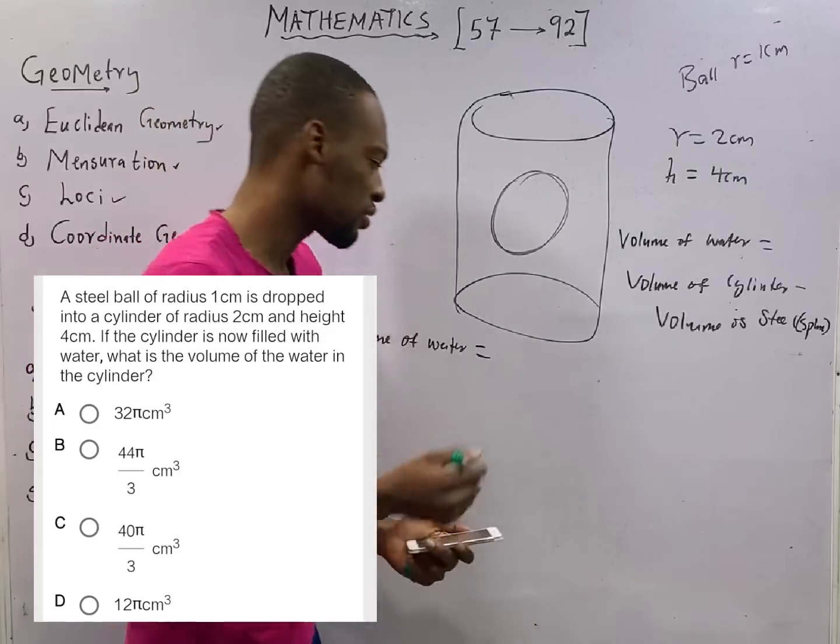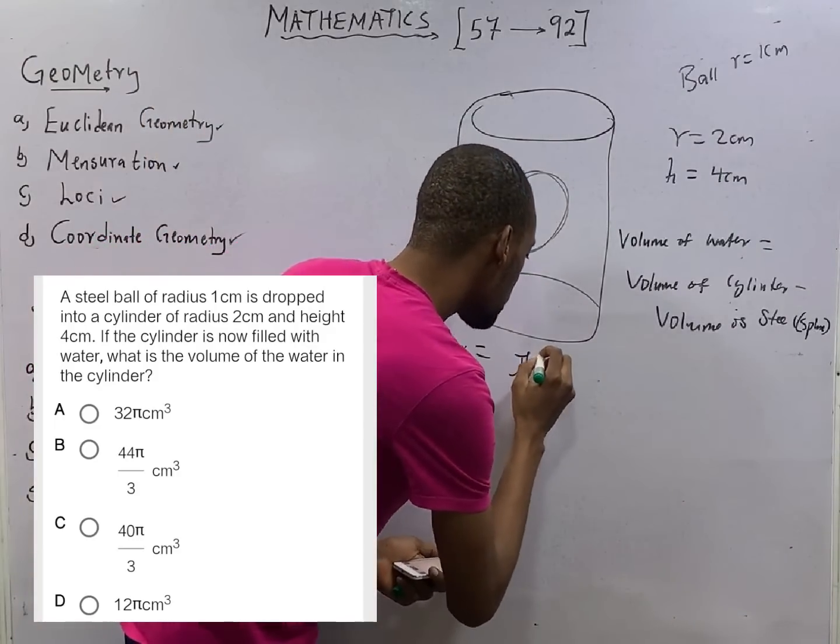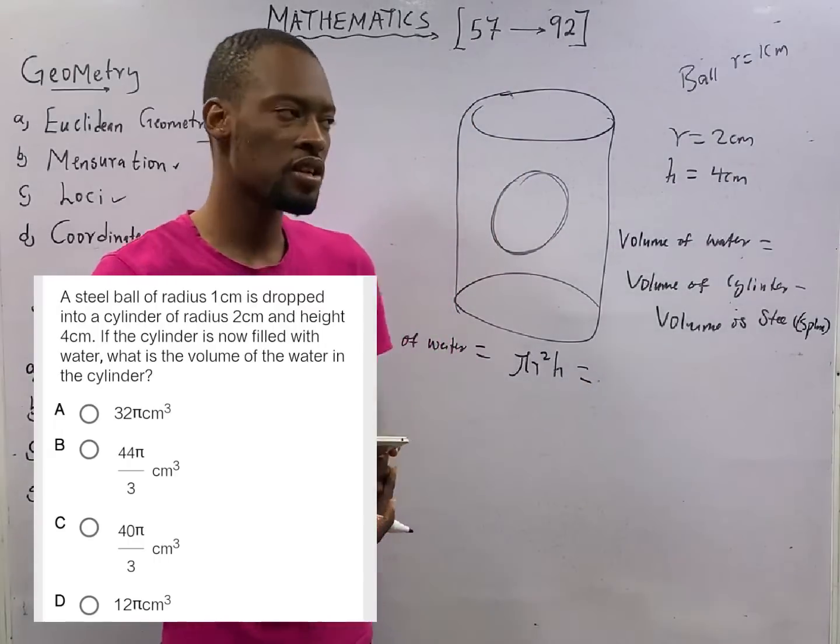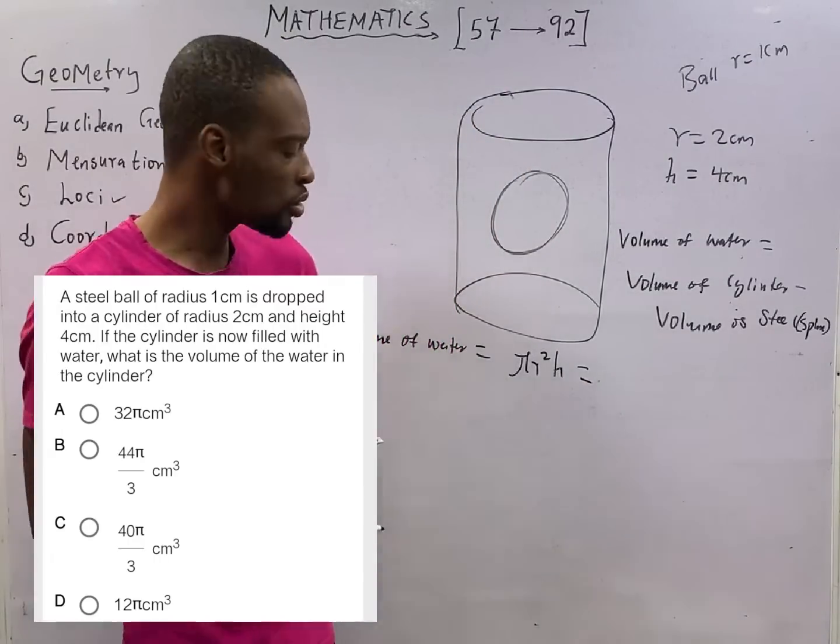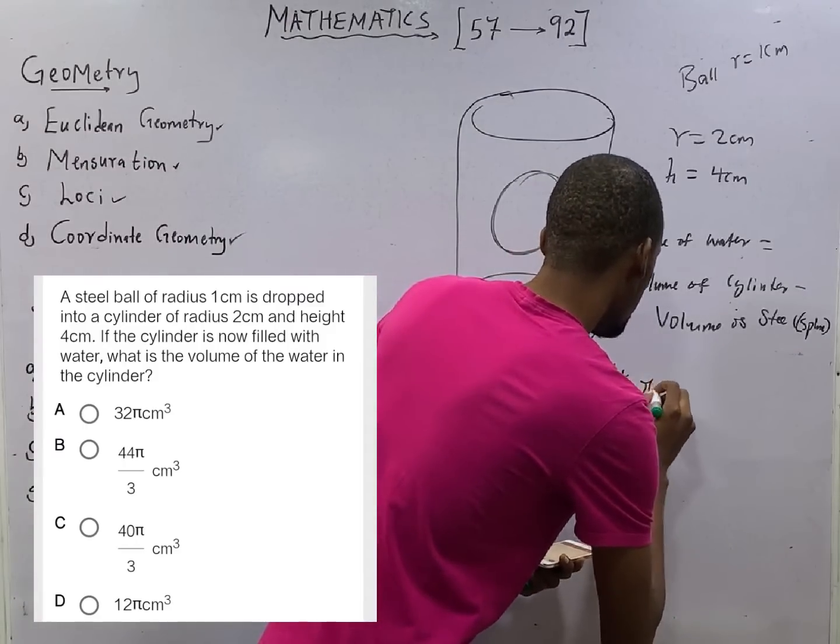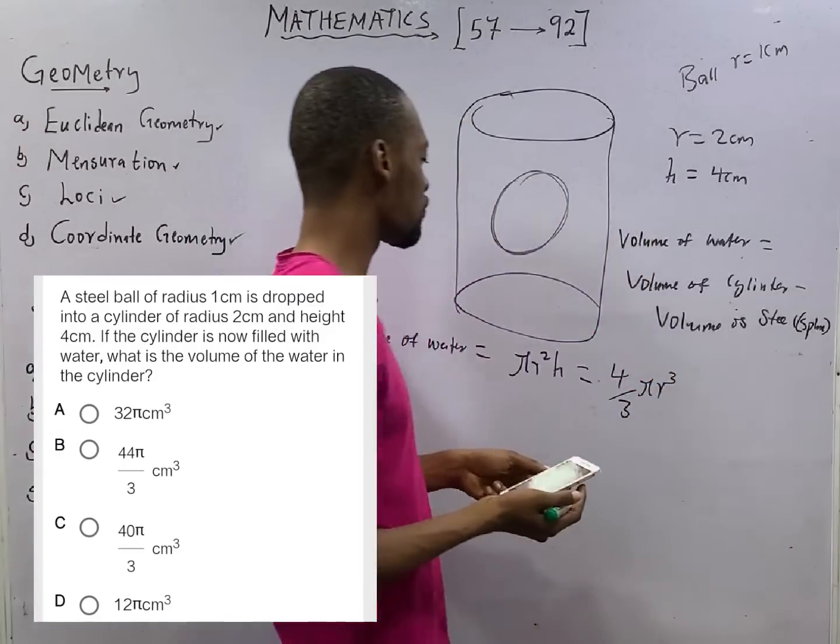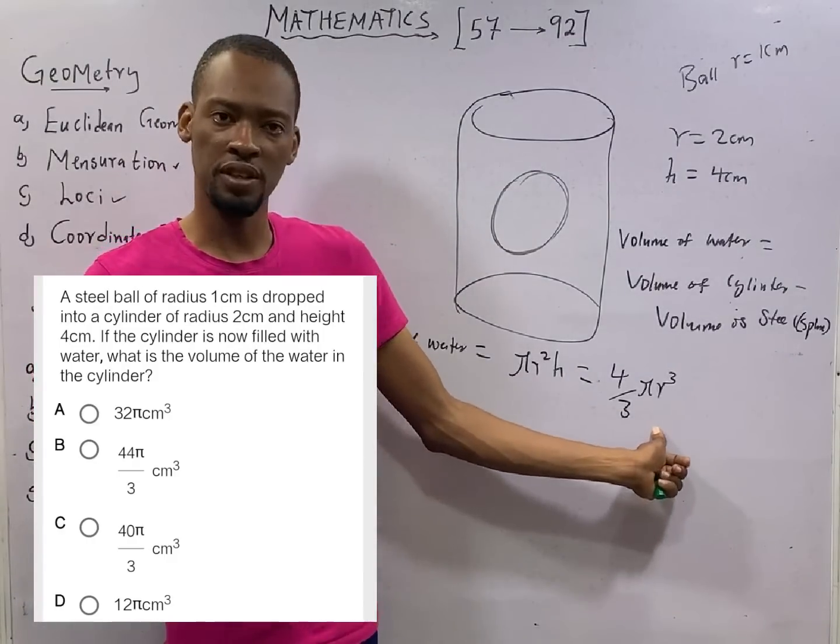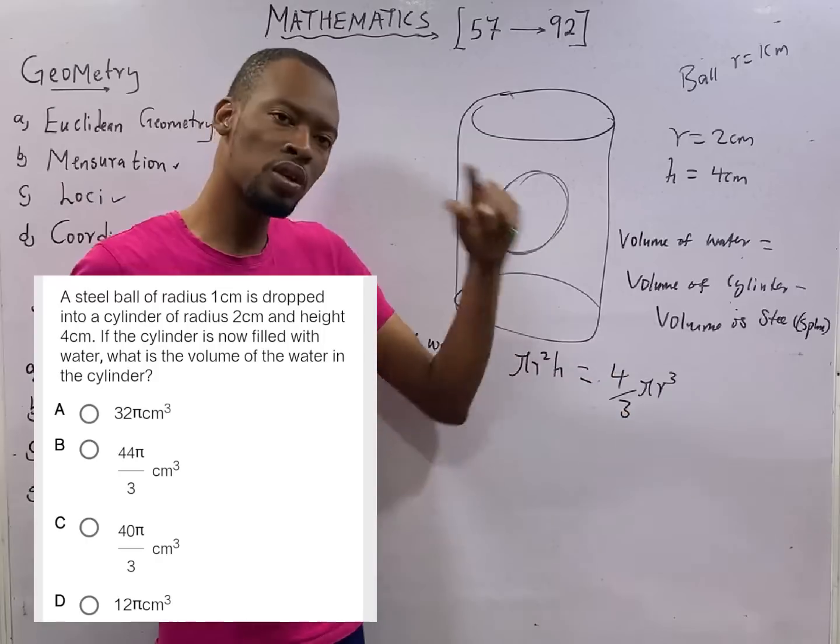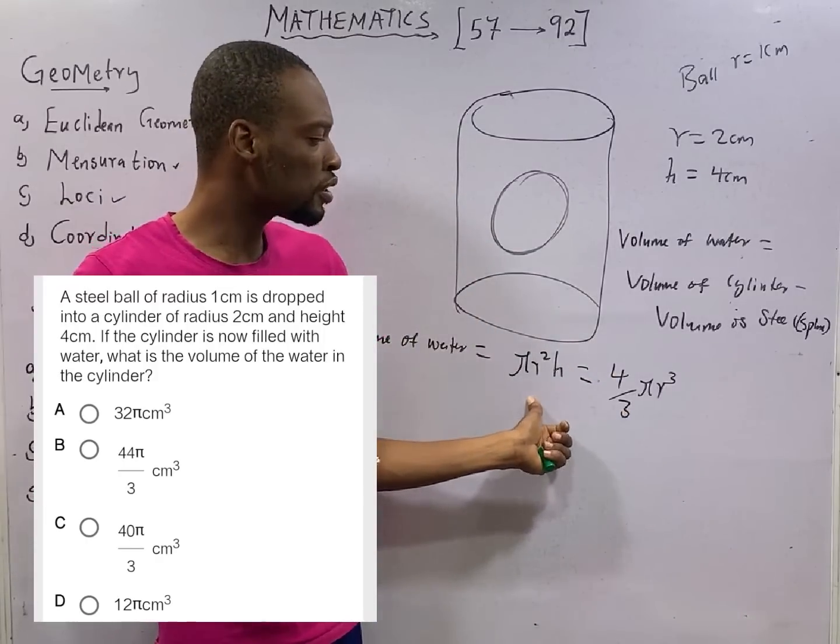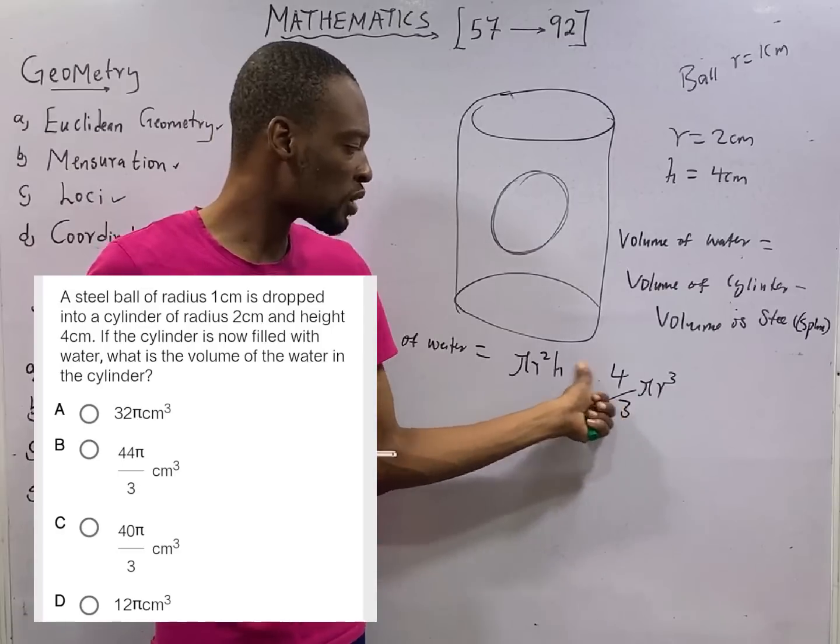The volume of cylinder is πr²h and the volume of sphere is 4/3 πr³. This is volume of cylinder and this is the volume of the sphere. In case you are asked to look for only volume of cylinder, this formula will apply. If you are asked to look for volume of sphere, this formula will apply. We are subtracting.